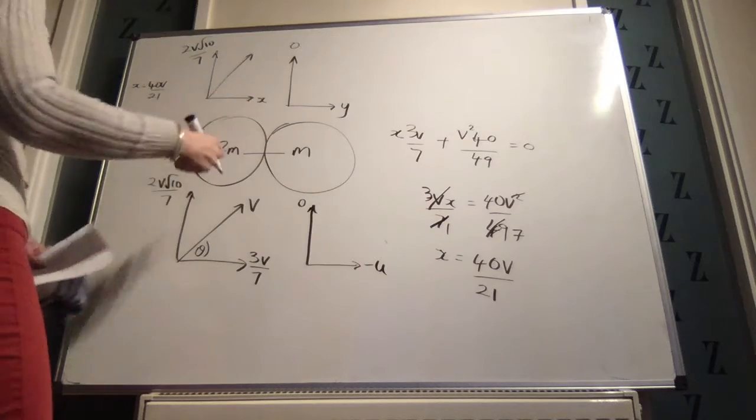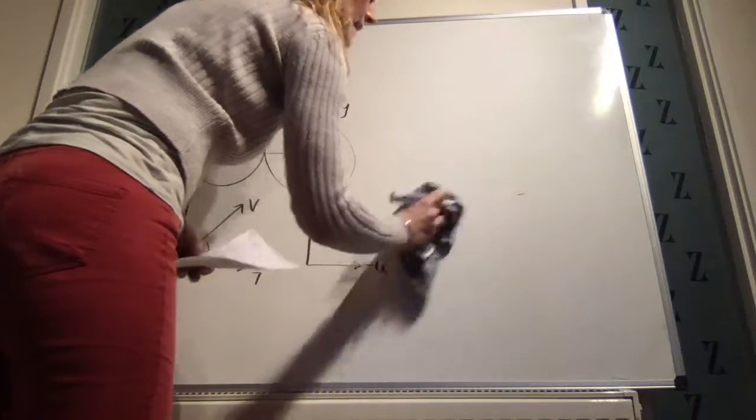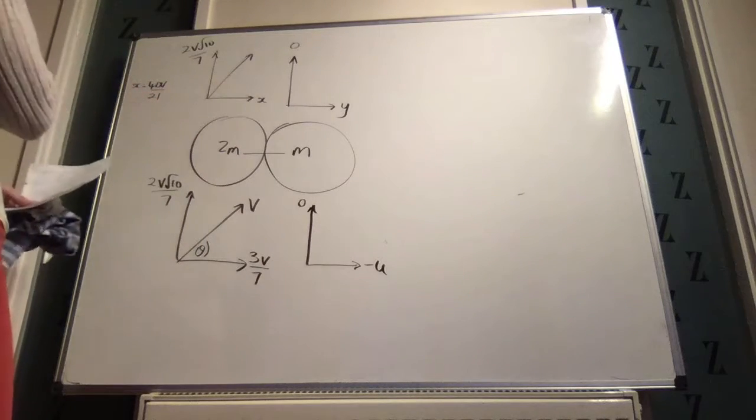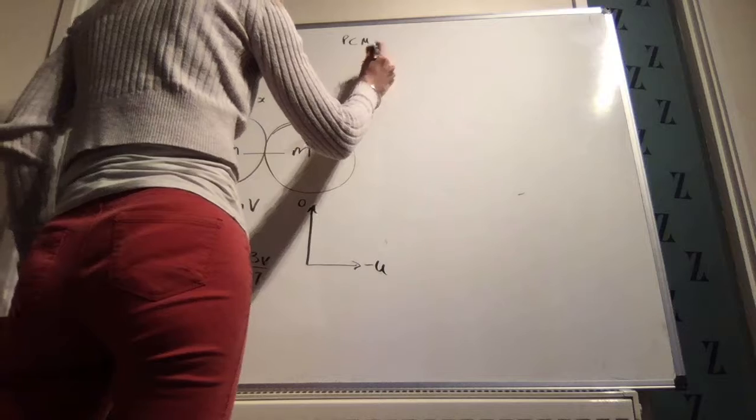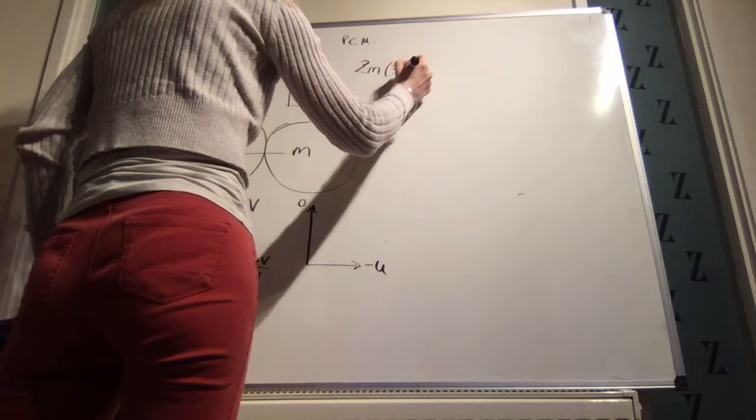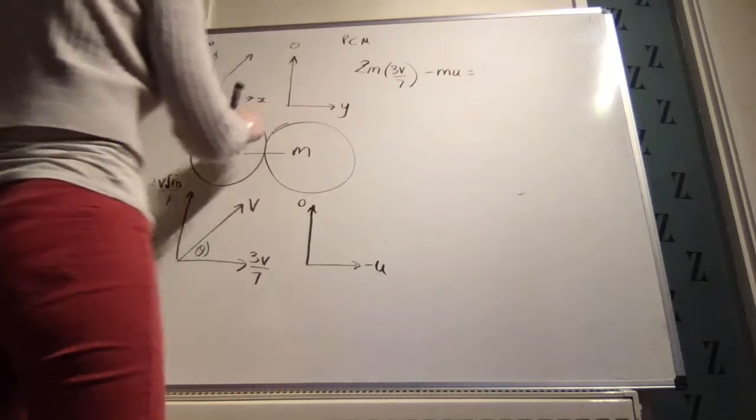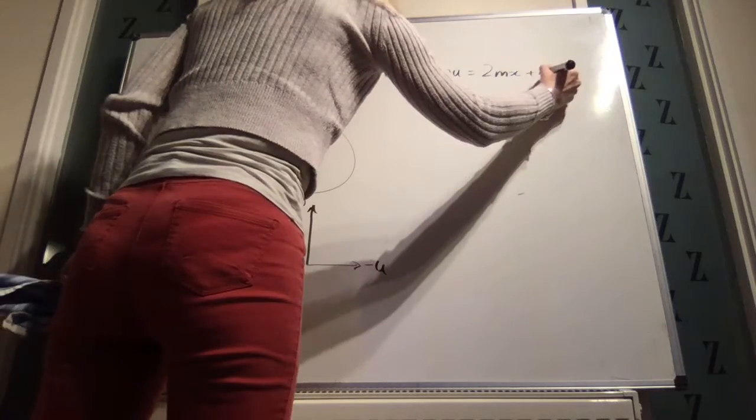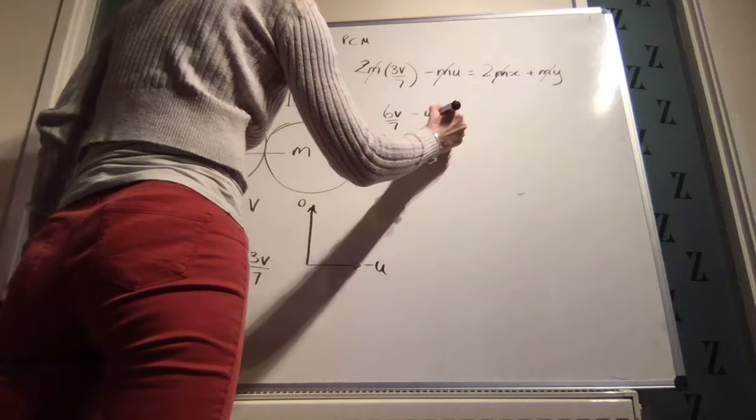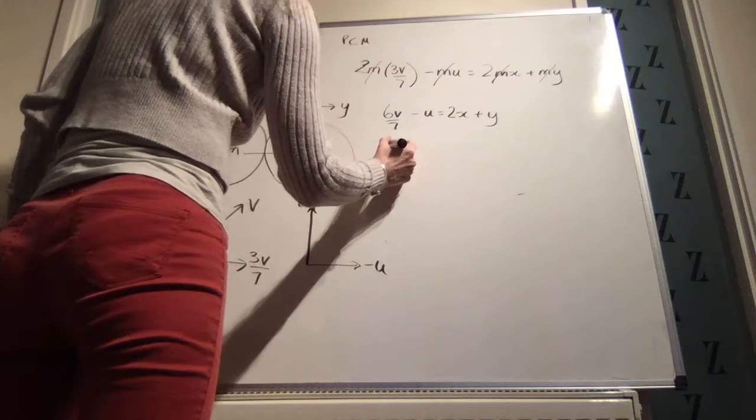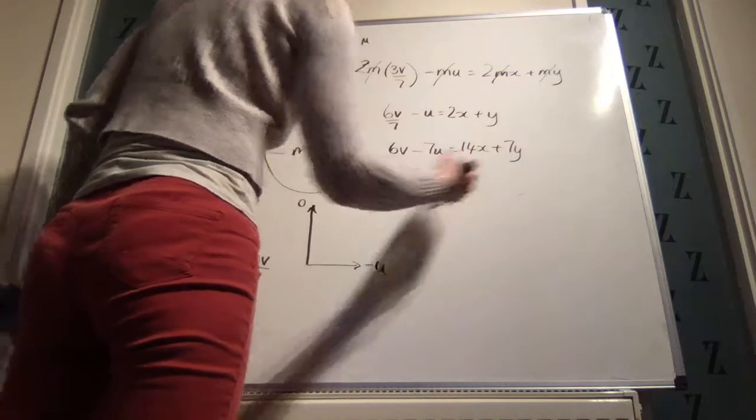Now I could just put that straight in here, or I could just do my normal principle of conservation of momentum, Newton's experimental law, figure out a relationship between x and v, and then use this information as well. So I think I'll do the normal. The principle of conservation of momentum: 2m times 3v over 7 plus m times minus u is equal to 2m times x plus m times y. Your m's divide out, and we get 6v over 7 minus u is equal to 2x plus y. Multiply across by 7, 6v minus 7u is equal to 14x plus 7y. That's one equation.